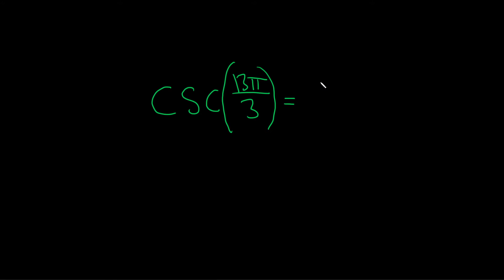So cosecant is actually 1 over, and the way I memorize it is, it's the one that starts with the other letter, so it's sine of 13π over 3.